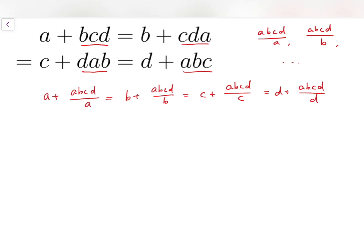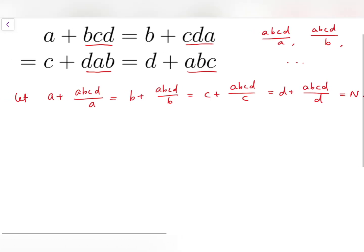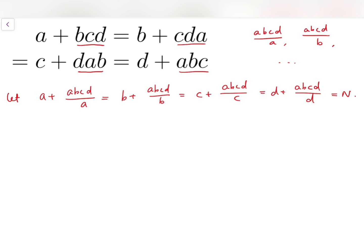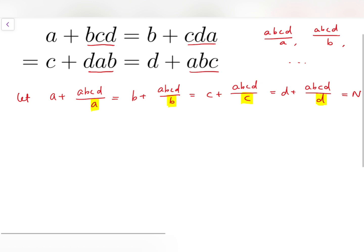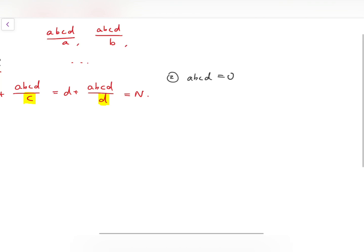And to solve it, I'm going to let these 4 expressions be equal to one single constant, let's say equal to N. To proceed, we must assume that all of these numbers are non-zero. So at this point, it seems we have to divide into two cases. The first case is that none of them is zero, so the product is non-zero.